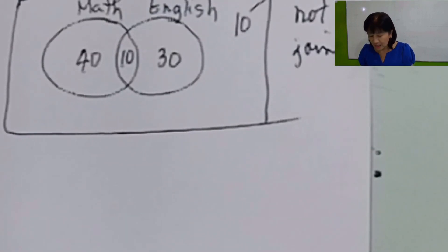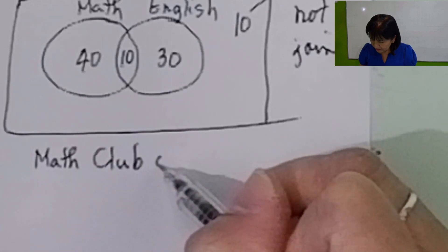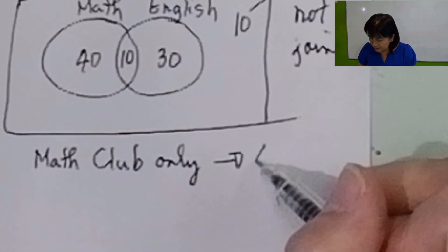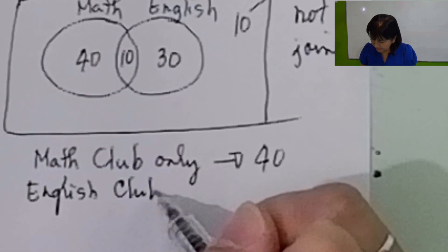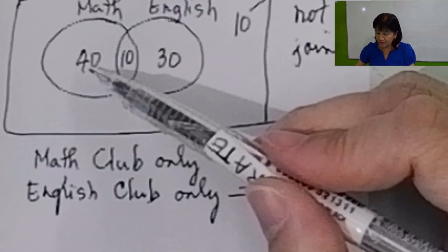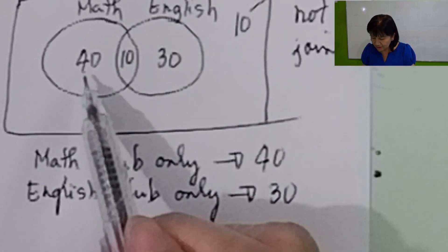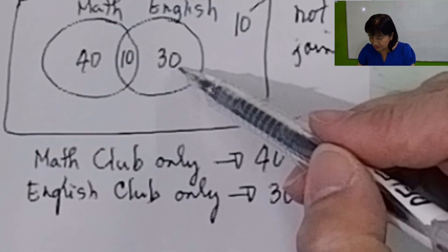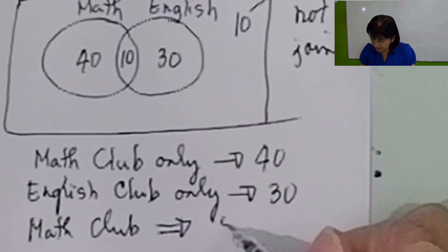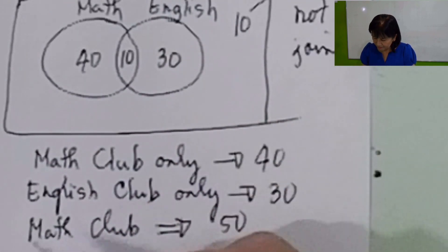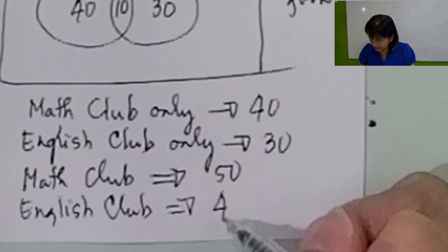Now, if the question asked for how many joined the math club only, your answer must be 40. If the problem asked for how many joined the English club only, your answer will be 30. Why 40 for math club only? Because the 10 in the intersection also joined English, so math club only is 40. If the question is how many joined the math club — with no 'only' — your answer is 50, because 40 plus 10 joined the math club. Similarly, how many joined the English club is 30 plus 10, which is 40. That is the difference.